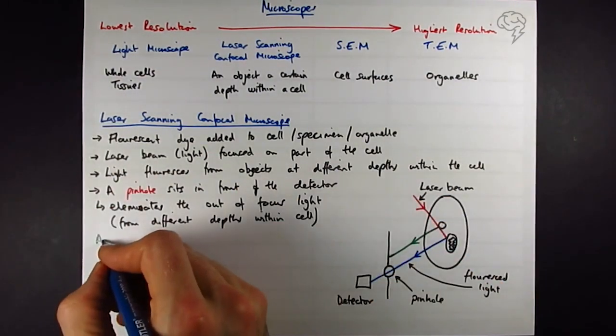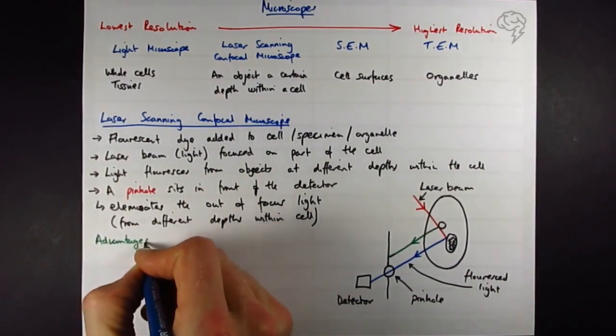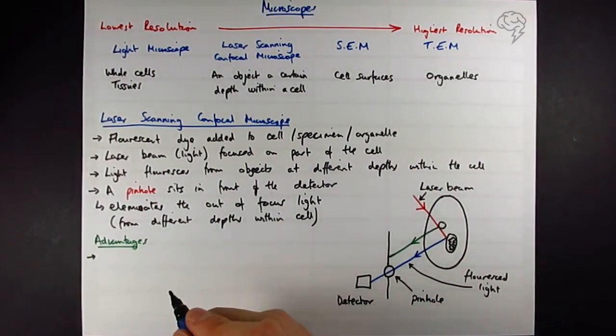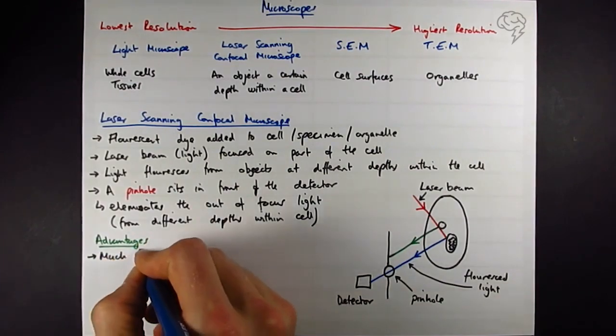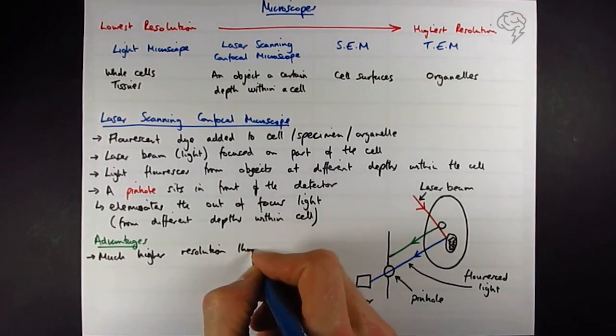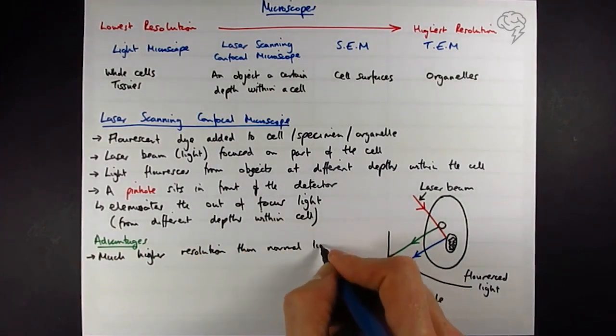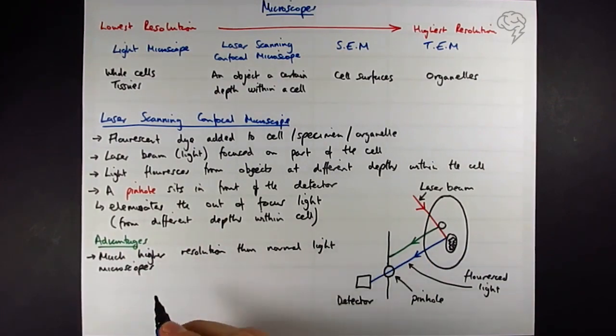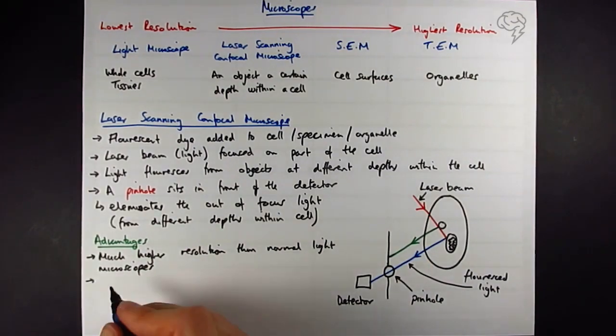So we can look at some of the advantages and disadvantages. Much higher resolution than normal light microscopes. And you can view objects inside cells.